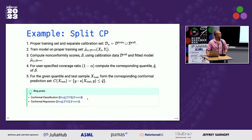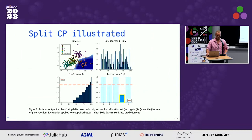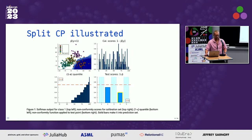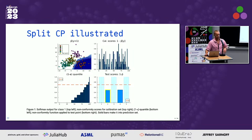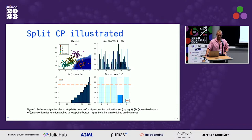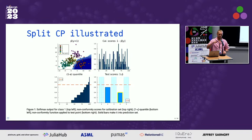Let me illustrate this process visually. In the top left we have the predicted softmax output for the target class. On the top right we have calibration scores — in classification a standard approach is one minus the softmax output of the true class. We then take the 1-minus-alpha quantile, where 1-minus-alpha is the user-specified coverage rate: the probability you specify that the test label is included in the prediction set.